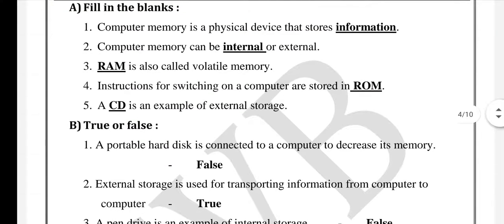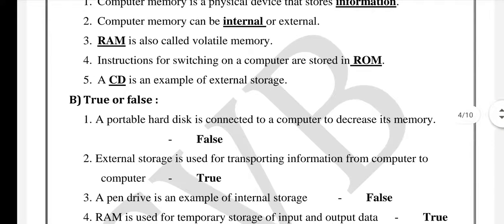Third one: RAM is also called volatile memory. Fourth one: instructions for switching on your computer are stored in ROM. Fifth one: CD is an example of external storage.